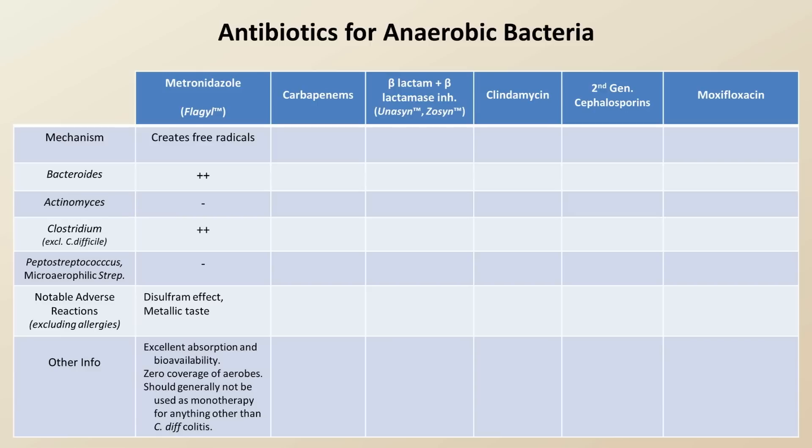The next category of antibiotic is the carbapenems. These inhibit cell wall synthesis and are active against just about all anaerobes. A notable adverse reaction is a lowering of the seizure threshold. As a general rule, imipenem and meropenem are preferred over ertapenem due to slightly broader coverage, though the latter has the significant advantage of decreased dosing frequency.